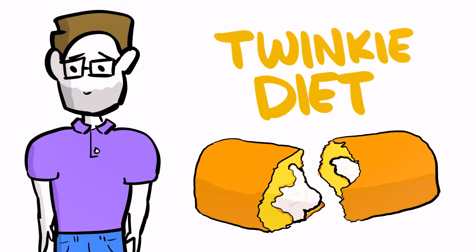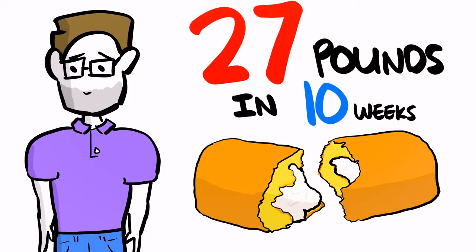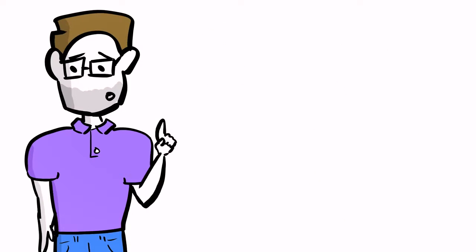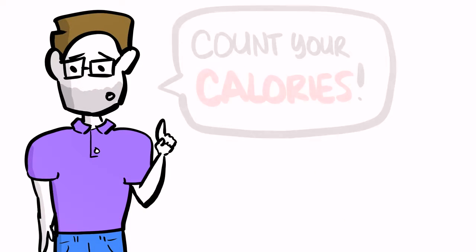Dubbed the Twinkie Diet, he was able to lose 27 pounds in 10 weeks. The point he was trying to make is that if you wanted to lose weight, you just have to count your calories.